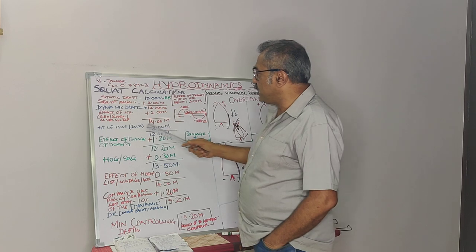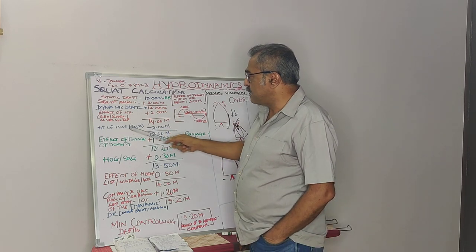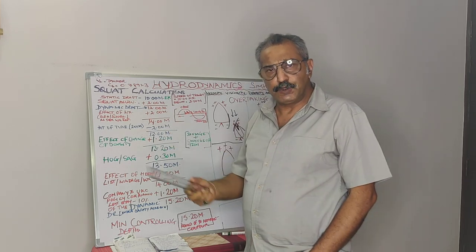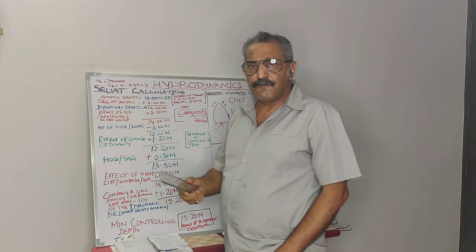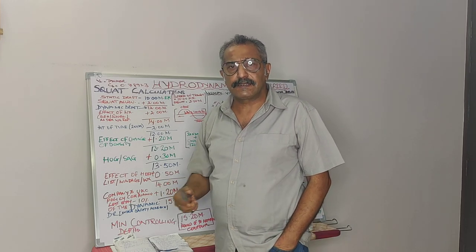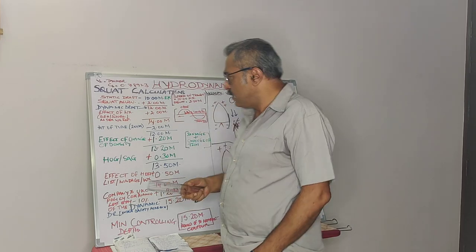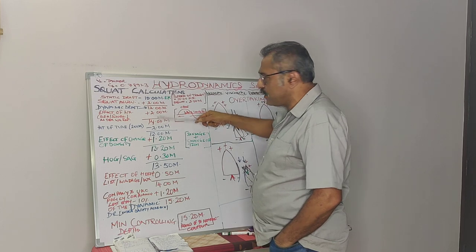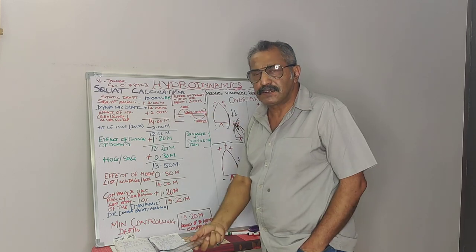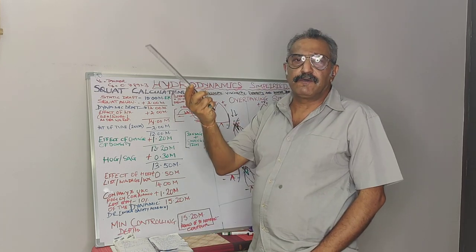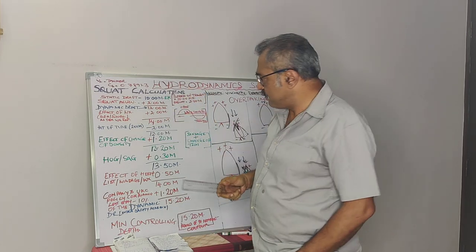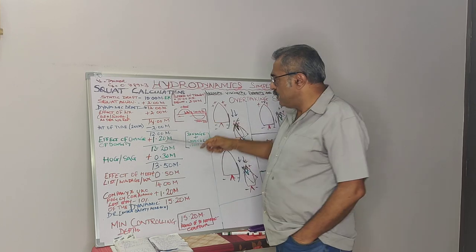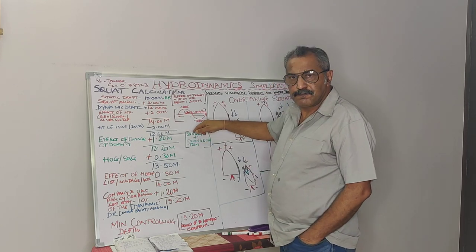The next aspect to take into consideration is the height of tide. The height of tide is 2 meters — a round figure for easier calculation. The height of tide of 2 meters is subtracted, because it gives us a rise above sea level — additional water. So that brings us to 12 meters.